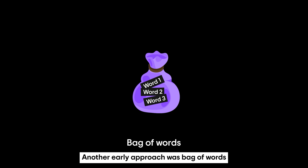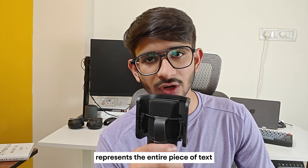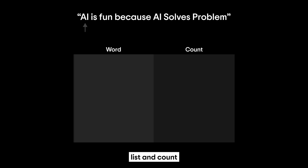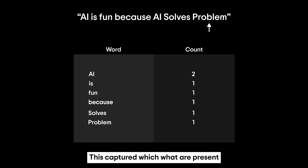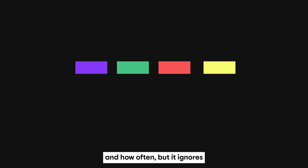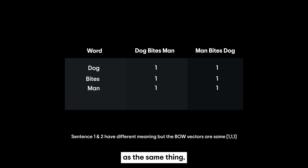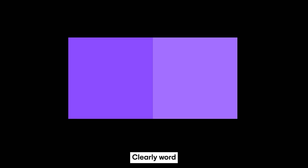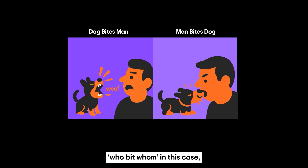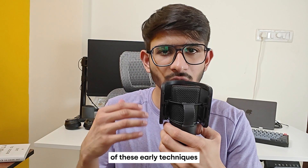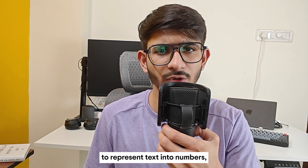Another early approach was bag of words. Instead of representing individual words, bag of words represents an entire piece of text by counting the occurrence of each word. You basically make a vocabulary list and count how many times each word appears, turning the text into a numerical frequency vector. But it ignores word order completely. The sentences 'dog bites man' and 'man bites dog' would be treated as the same thing, since both contain one dog, one man, and one bites. Clearly, word order matters for meaning — bag of words loses that information.